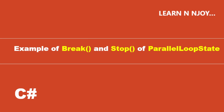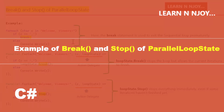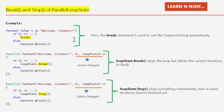Let's consider a sequential loop where we break when encountering a comma. In this code, I have written a for-each loop — for each char c in 'welcome, viewers'. If c equals comma, we break the loop with the break statement. If c is not comma, we print the character to the console window. The break statement is used to exit the sequential loop prematurely, but we cannot use this break statement in the parallel loop.